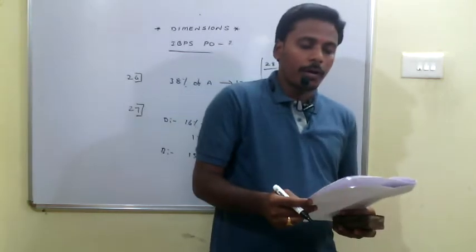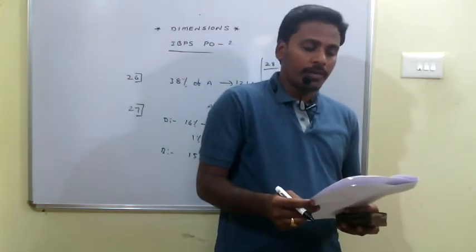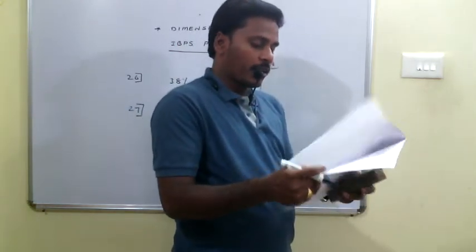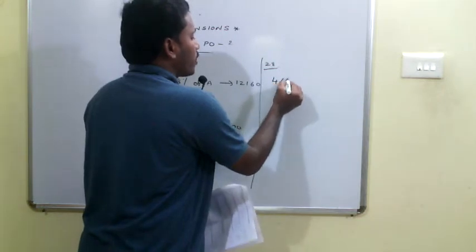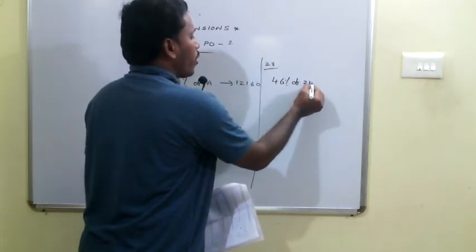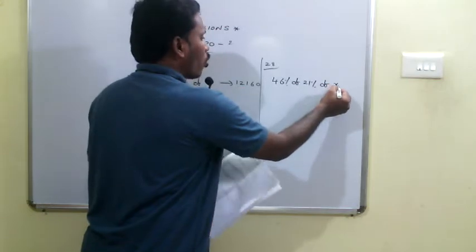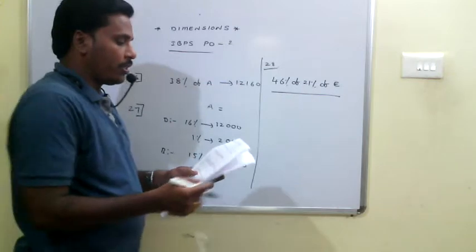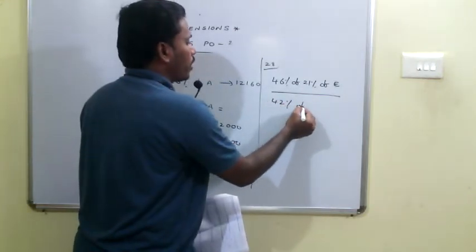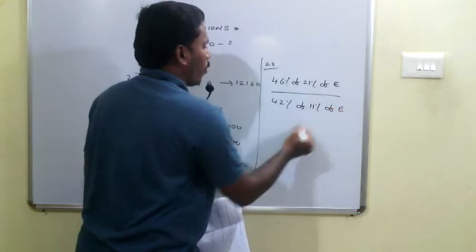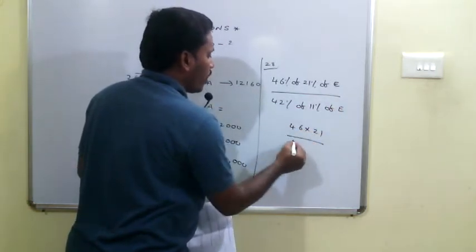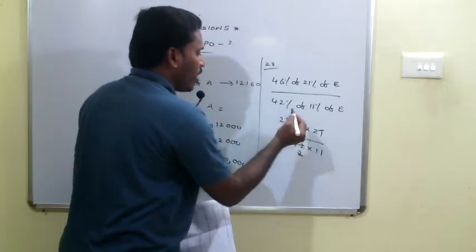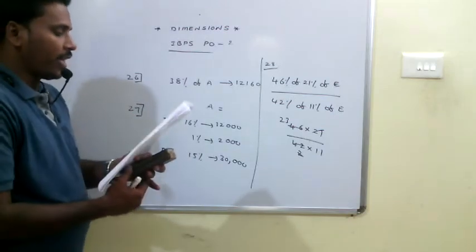Q28: Find the ratio of male employees in department F to those in department C. Male employees in F = 46% of (21% of total). Male employees in C = 42% of (11% of total). Ratio = (46 × 21) / (42 × 11) = 23 to 11.